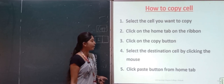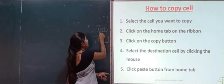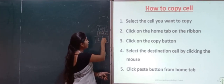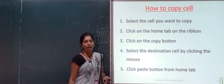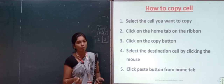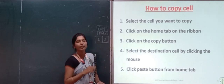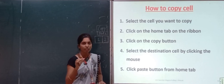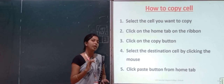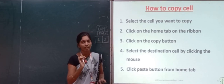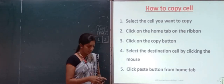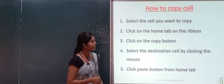Then click the Paste button from the Home tab. If you click on that, it will copy the same data into your new cell. You also have another option: just right-click on the cell, click the Copy option, go to the preferred destination cell, right-click and click Paste. The same data will be copied into that cell. This is how to copy a particular cell.